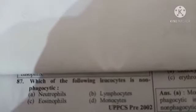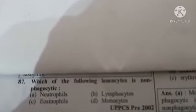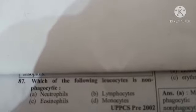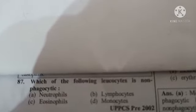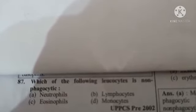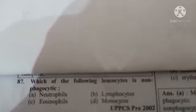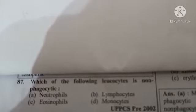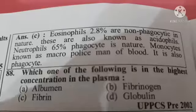Next question: which of the following leukocytes is non-phagocytic? Option A: neutrophils, Option B: lymphocytes, Option C: eosinophils, Option D: monocytes. The correct answer is eosinophils.